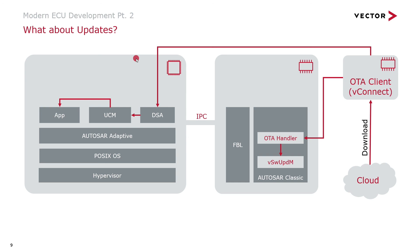On the Adaptive AutoSAR side, it is even more advanced. A software package is downloaded via a diagnostic service application (DSA) and passed to the UCM — the Update and Configuration Manager. Here we can update applications in place, meaning we can install and run an application without a reboot, just as you know from Android or iOS devices. Crucially, updates on both sides — Classic and Adaptive — are done in a consistent manner. Our off-board tooling helps create an update campaign containing packages for both sides, and our onboard software guarantees that if one side fails, a rollback is performed on the other side as well.